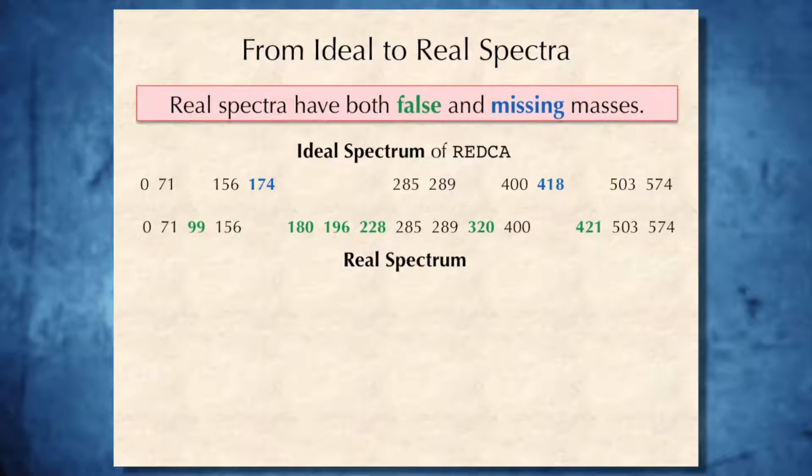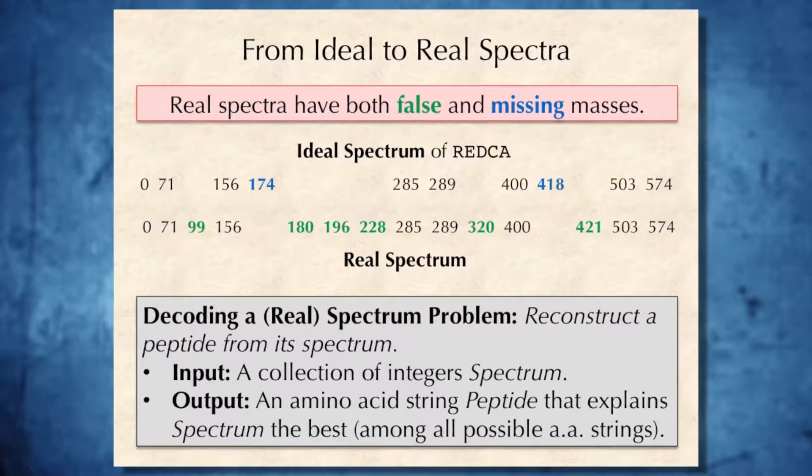Our goal, however, is to move from decoding ideal spectra to decoding real spectra. And at this line, you see ideal spectrum with some false and missing masses and real spectrum. And reality is that in spectra generated by mass spectrometers, there are usually many false and missing masses, thus complicating our problem of decoding a real spectrum.